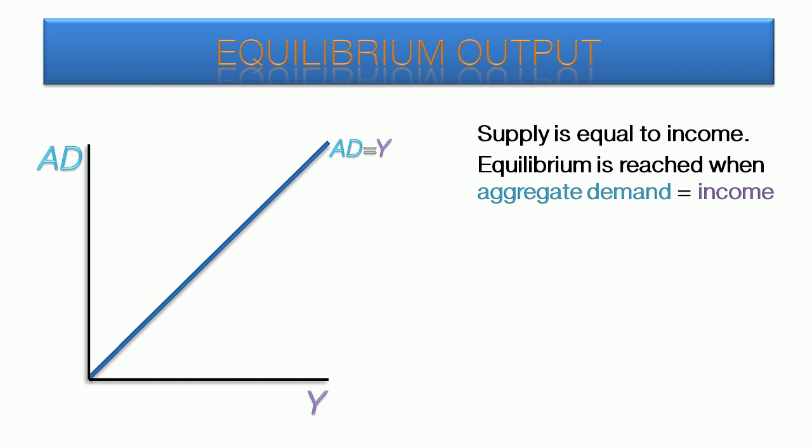The aggregate demand curve starts out on the y-axis at a value equal to the exogenous demand, A-bar, and then continues upward with increasing levels of income. Equilibrium occurs when the two lines intersect. This indicates the equilibrium income and the equilibrium level of aggregate demand.